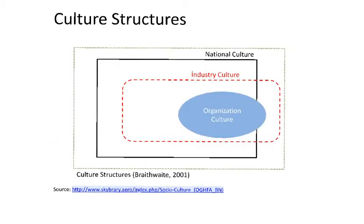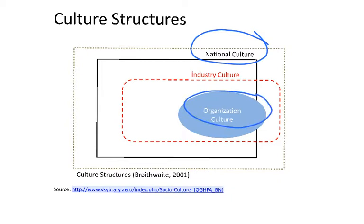Cultural structures can be divided into different dimensions. One dimension is national culture — for instance, what is the culture in a given country? Another dimension is organizational culture, meaning that within each organization or firm, there is a different culture inside. Third and last is the industry culture, which applies to the whole industry. In this case, we are going to apply it to aviation, where certain features apply for the whole industry.